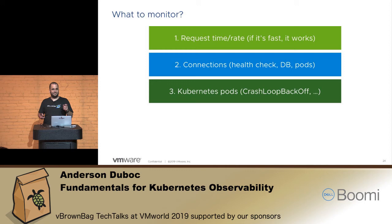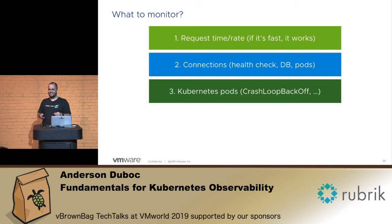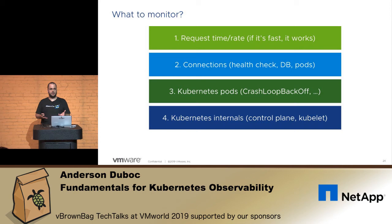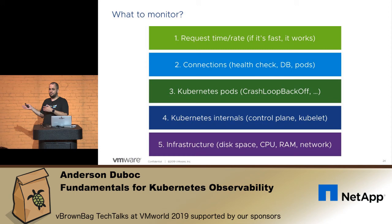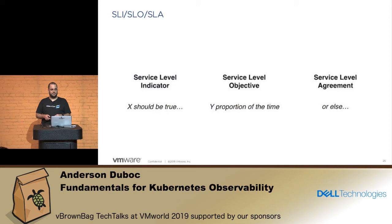I don't know who is using Kubernetes here — nobody? In production? So there's a thing called CrashLoopBackOff. Yeah, if you start using Kubernetes you're gonna see it — don't worry. Kubernetes internal components have so many things we have to look at: the control plane, the kubelet, and infrastructure. That's the basic — disk space, CPU, RAM, and saturation of network.